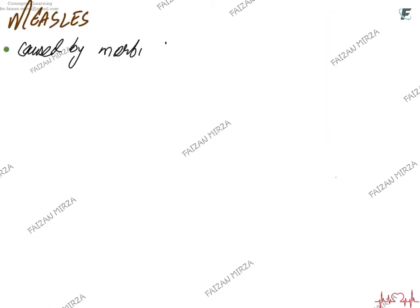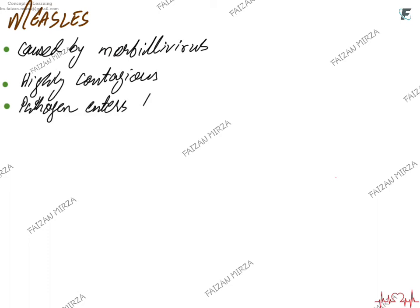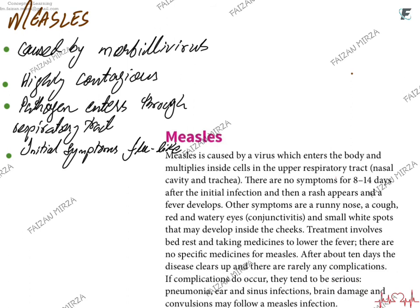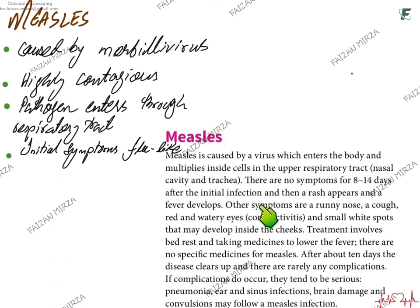Discussing the disease measles: measles is caused by the morbilli virus — it is not caused by a bacteria or a protoctist. It is a highly contagious disease. The pathogen enters the body through the respiratory tract, and initially the symptoms are flu-like. The virus multiplies inside the cells of the upper respiratory tract, the nasal cavity, and trachea mainly. There are no symptoms for about 14 days. After the initial infection, a rash or white patches appear in the oral cavity, and other symptoms such as runny nose, cough, or watery eyes may develop early in the disease.